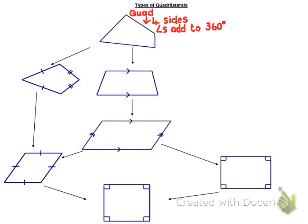So what happens if we take a quadrilateral and we add one pair of parallel sides? That forms a shape called a trapezium. A trapezium is a type of quadrilateral, which means everything that's true in a quadrilateral is true in a trapezium. So a trapezium has four sides, the angles add to 360, and it has this extra property of one pair of parallel sides.